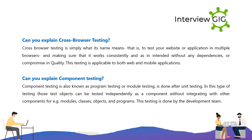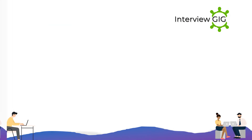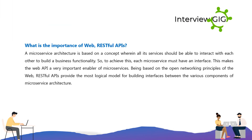Can you explain component testing? Component testing, also known as program testing or module testing, is done after unit testing. In this type of testing, test objects can be tested independently as a component without integrating with other components — for example, modules, classes, objects, and programs. This testing is done by the development team.